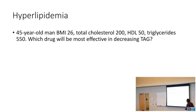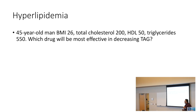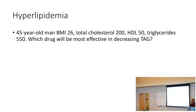We have a 45-year-old male with a BMI of 26. His cholesterol levels are 200, which are kind of high. However, look at his triglyceride concentrations — those are super high. Which drug will be most effective in decreasing triacylglyceride concentrations? That's going to be fibrates.